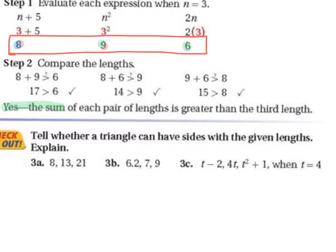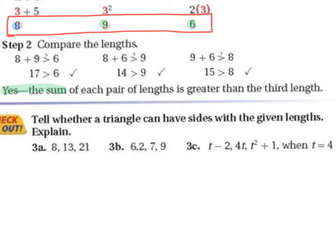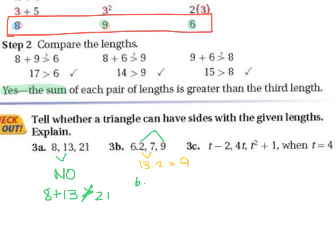For practice 3A with sides 8, 13, and 21: 8 plus 13 is 21, which equals — not greater than — 21, so this is no. For 3B with sides 6.2, 7, and 9: 6.2 plus 7 is 13.2, greater than 9; 7 plus 9 is 16, greater than 6.2; and 6.2 plus 9 is 15.2, greater than 7. All three pairs work, so this is yes.